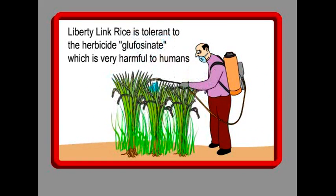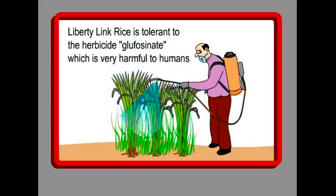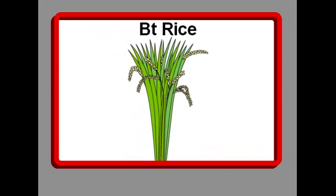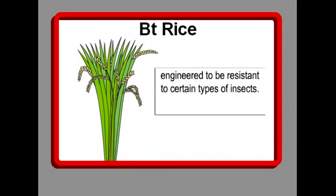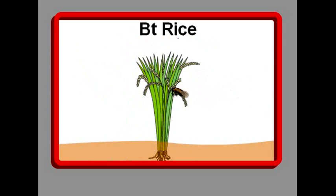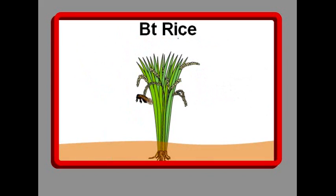Using these methods, one company in the US has made a GE rice called Liberty Link rice, which is tolerant to the herbicide Glufosinate. Another type of GE rice is BT rice. BT rice produces its own insecticide to be resistant to certain types of insects, especially moths and butterflies.